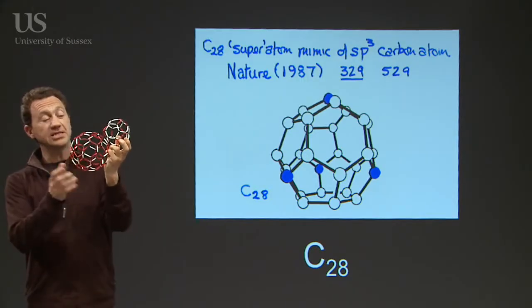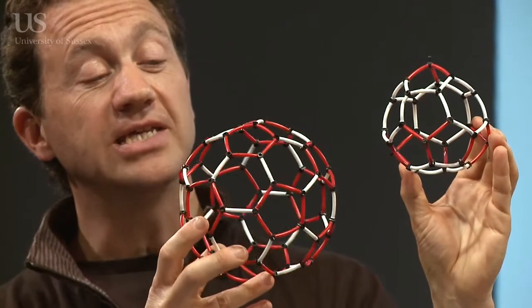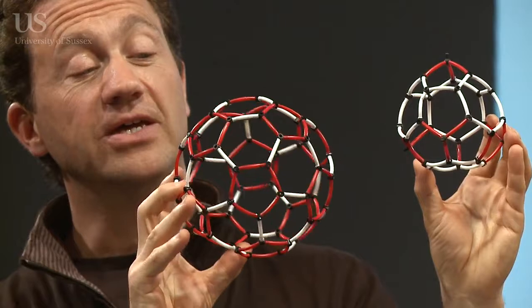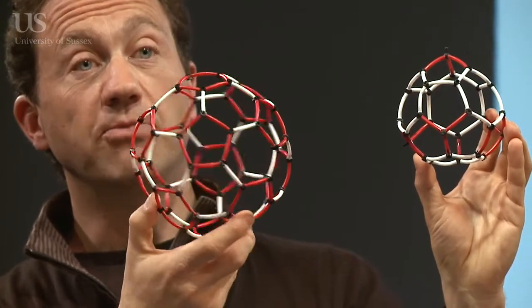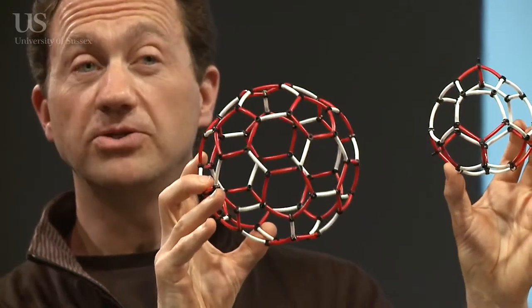If you look at C60, Buckminster Fullerene, you'll see that it's made of pentagon rings and hexagon rings. In C60, all the pentagons are isolated from each other by these white bonds. That's true for C60, but when you go down to the smaller fullerenes, the cages with less than 60 atoms, that can no longer be true.